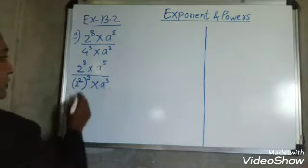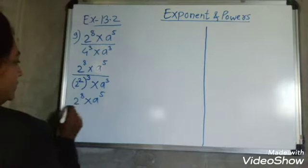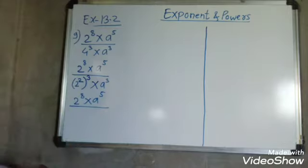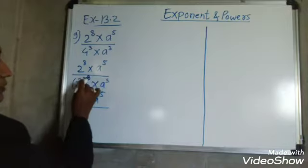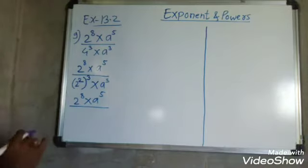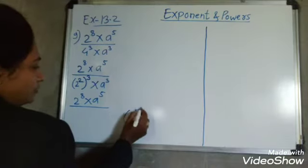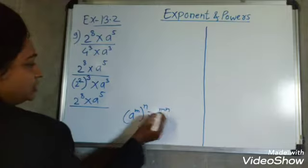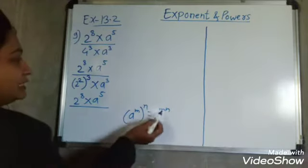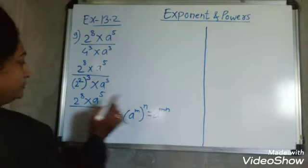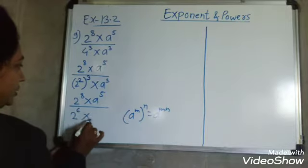Now, for 2 square raised to cube, we use the formula: A raised to M raised to N is equal to A raised to M times N. So 2 squared raised to 3 becomes 2 raised to 2 times 3, which is 2 raised to 6. We now have: 2 raised to 8 into A raised to 5, upon 2 raised to 6 into A cube.